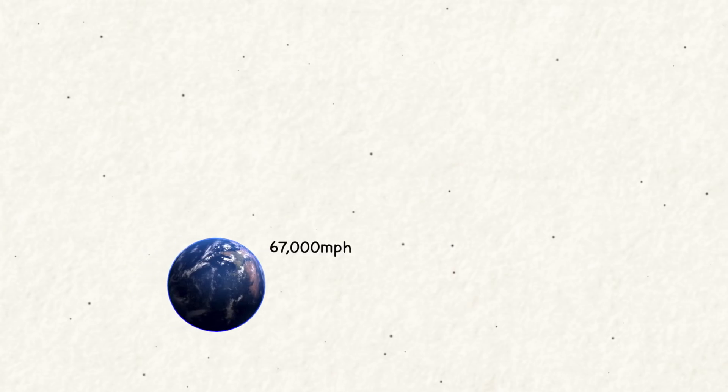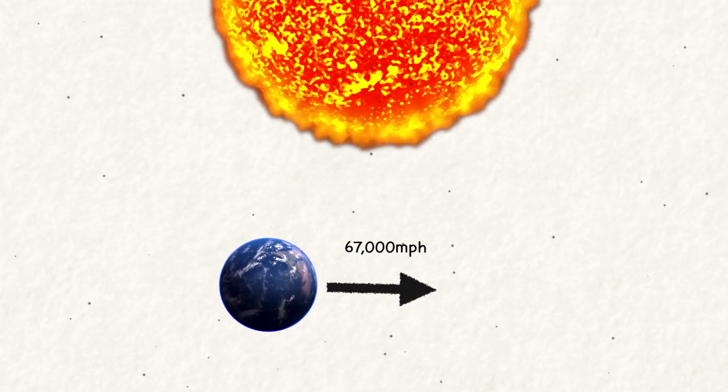Earth, and everything on it, is traveling very fast, about 67,000 miles per hour, in a direction that is basically always sideways relative to the Sun.